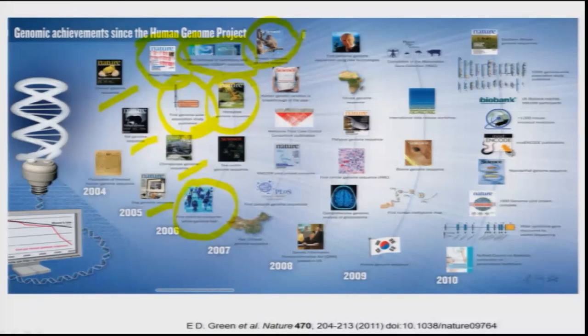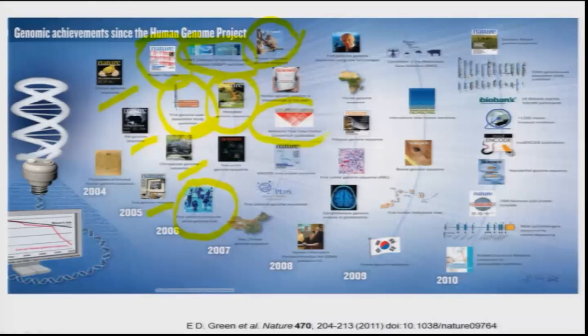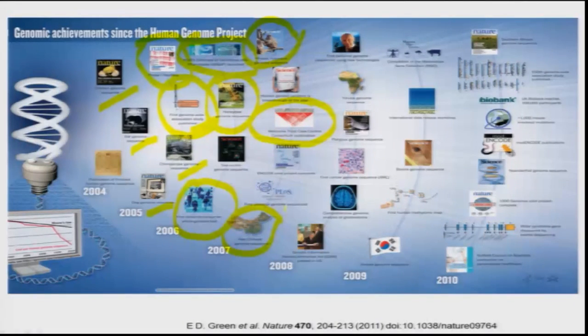Other developments include the Wellcome Trust case-control study consortium, where thousands of normal individuals from a given geographic or ethnic region were recruited and compared with individuals who have a particular disease from the same population, to see what variants make an individual at risk of developing a disease or more resistant to it. Additionally, different countries began sequencing their own populations, because the human genome sequence came from only a few individuals who probably do not represent all populations on earth. The Chinese government initiated a sequencing project of their population in 2007.